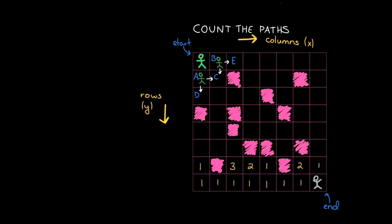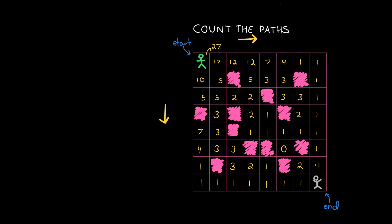We can go through and fill in the entire matrix this way, filling in values as we go — ones along the edges, zeros for blocked cells, and sums for interior cells. Our runtime is still O(n²) and so is our space complexity. But we've reduced the actual amount of memory used slightly because we no longer have to use a call stack.